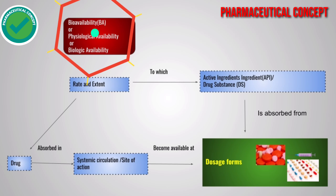Bioavailability, or physiological availability, or biological activity — BA — is the rate and extent to which the active ingredient, that is the API or drug substance, is absorbed from the dosage form like tablets, capsules, or another dosage form, and becomes available at the systemic circulation or at the site of action.